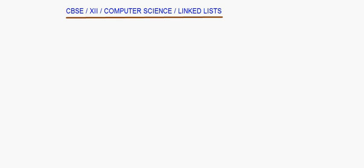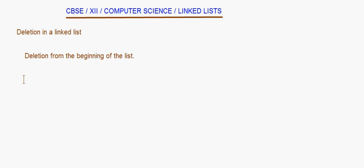Today let's take up linked list deletion. We'll be covering deletion from the beginning of the list. Whenever we want to delete a node from a linked list, two things must be done: first we search for the node, then make the necessary changes. But for deletion from the beginning, we need not search because we already know it's the first node.